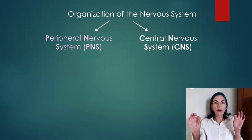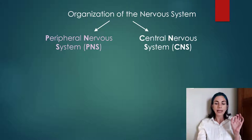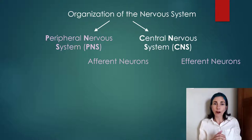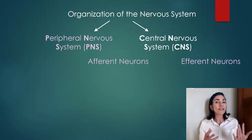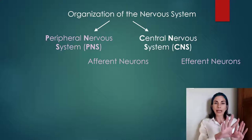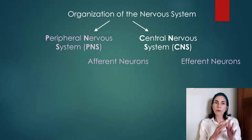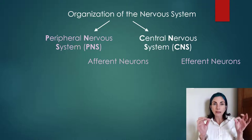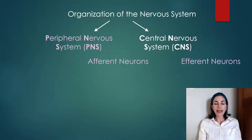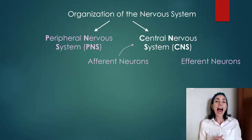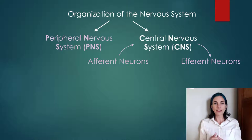Those neurons are functionally broken down into two types. One type is called the afferent neuron, and another is called the efferent neuron. Afferent neurons are responsible for bringing information from the body to the central nervous system — most often sensory information like touch, pressure, heat, pain, body positioning, and muscle tension. If the central nervous system decides to do something about that sensory information, it directs a response back to the body via efferent neurons.